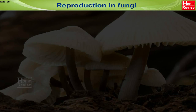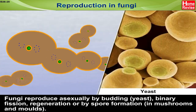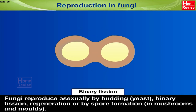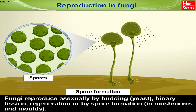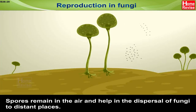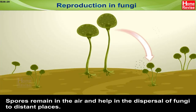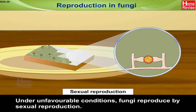Fungi reproduce asexually by budding as in yeast, binary fission, regeneration, or by spore formation as in mushrooms and molds. Spores remain in the air and help in the dispersal of fungi to distant places. Under unfavorable conditions, fungi reproduce by sexual reproduction.